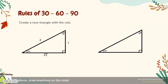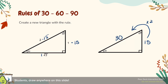In a 30-60-90 triangle, the pattern is: across from the 30° is always a single number, across from the 60° is always that same number with √3 next to it, and the hypotenuse always doubles. For example, if I scale the triangle by 15: across from 30° is 15, the hypotenuse is 30 (15 × 2), and across from 60° is 15√3.